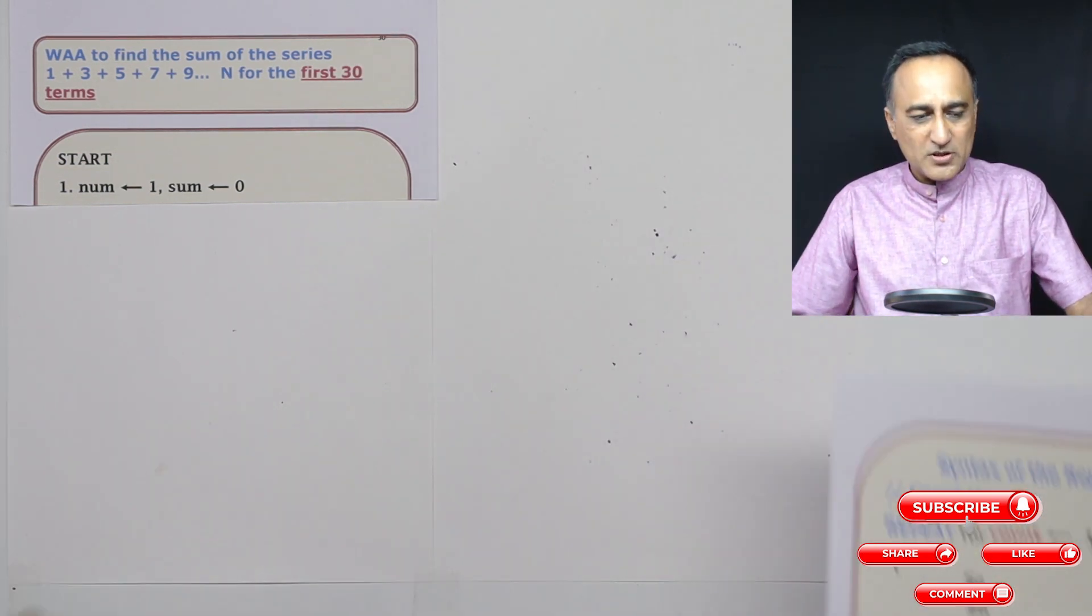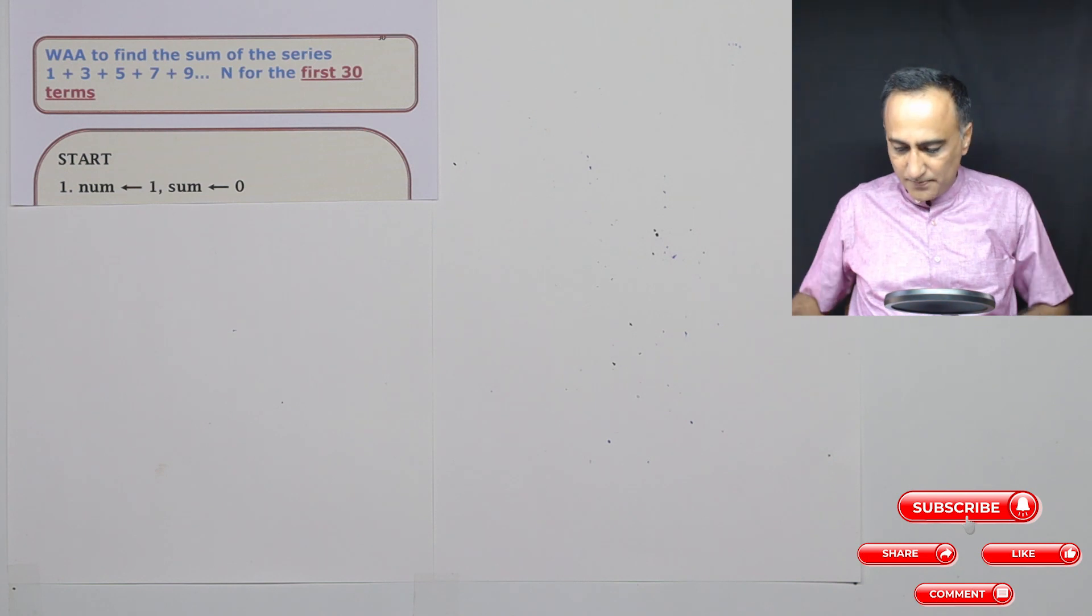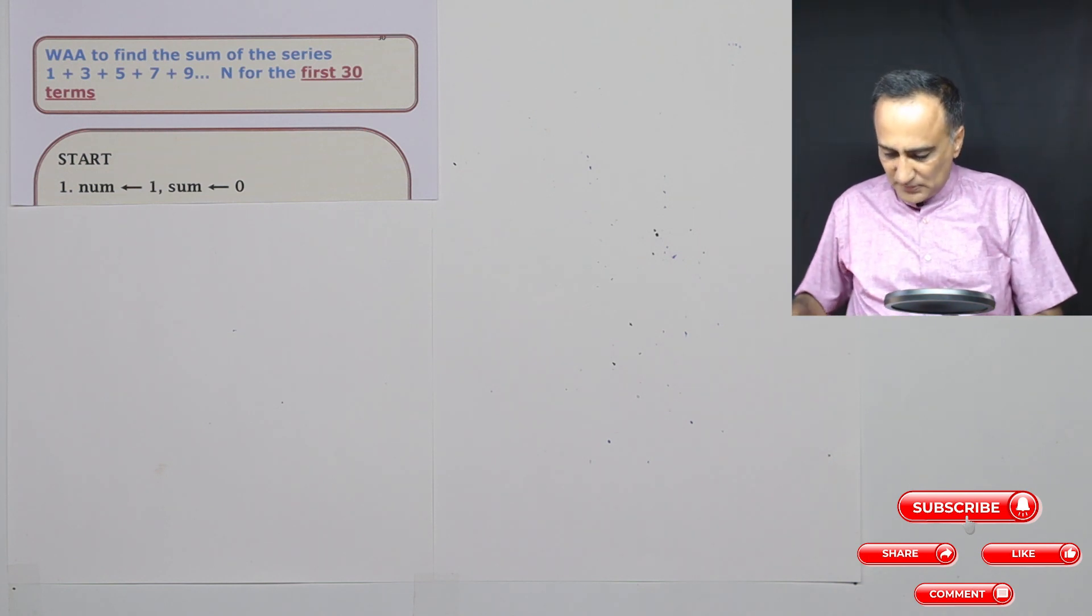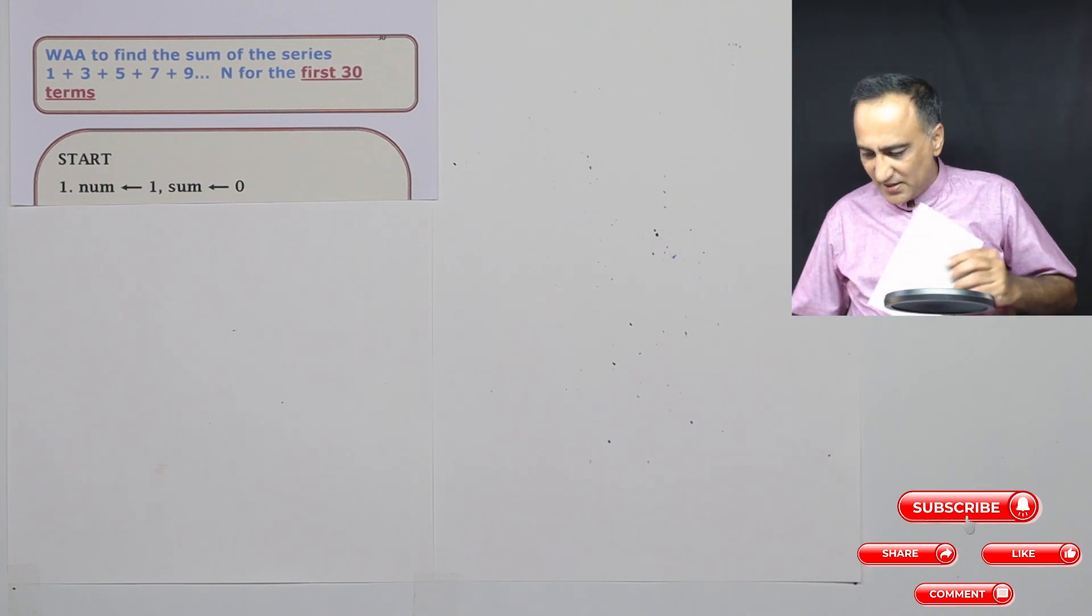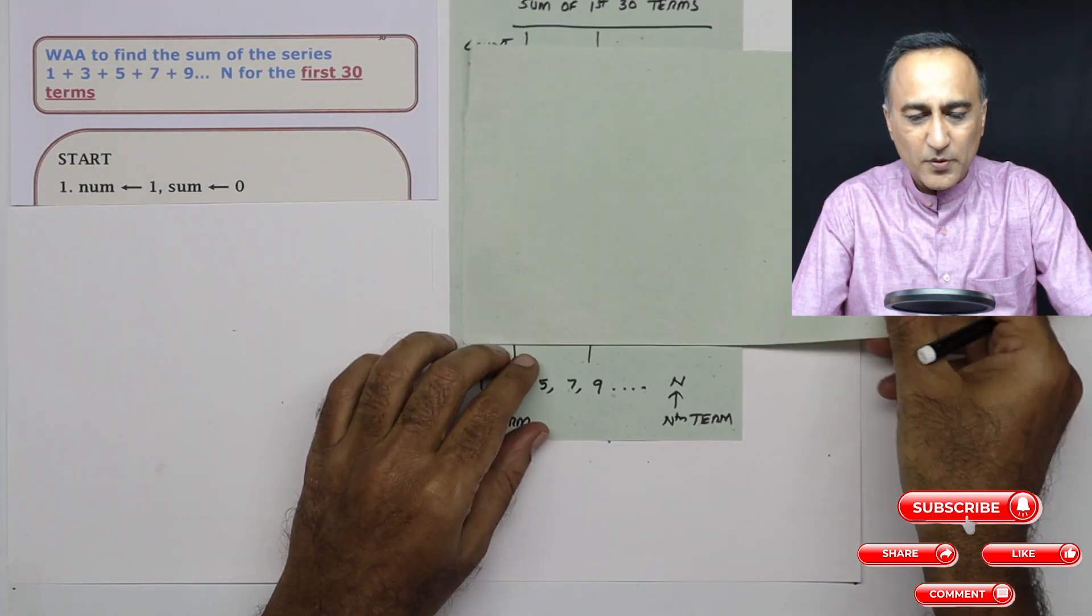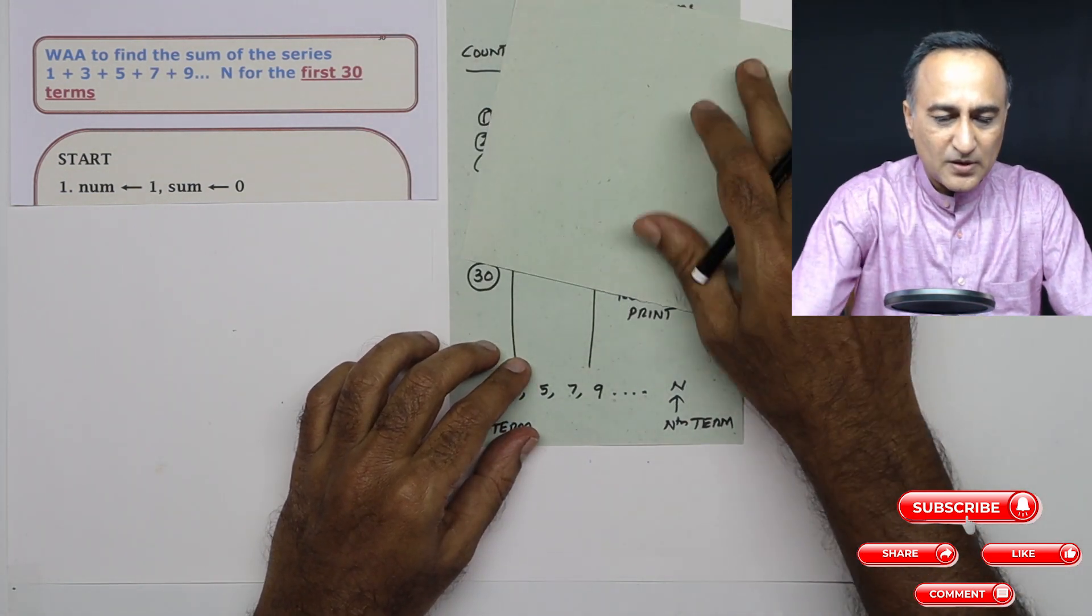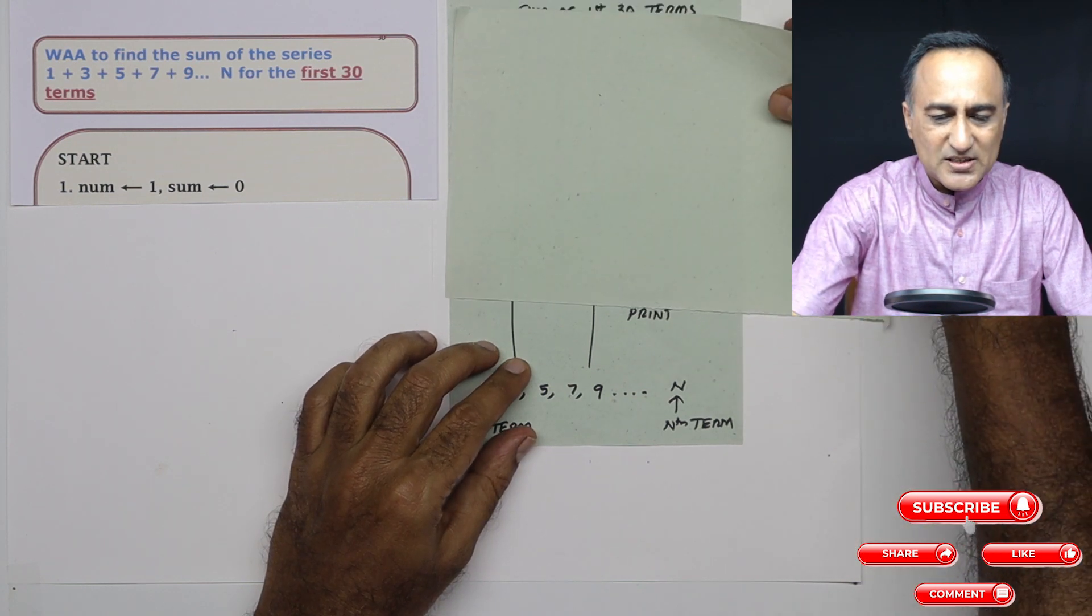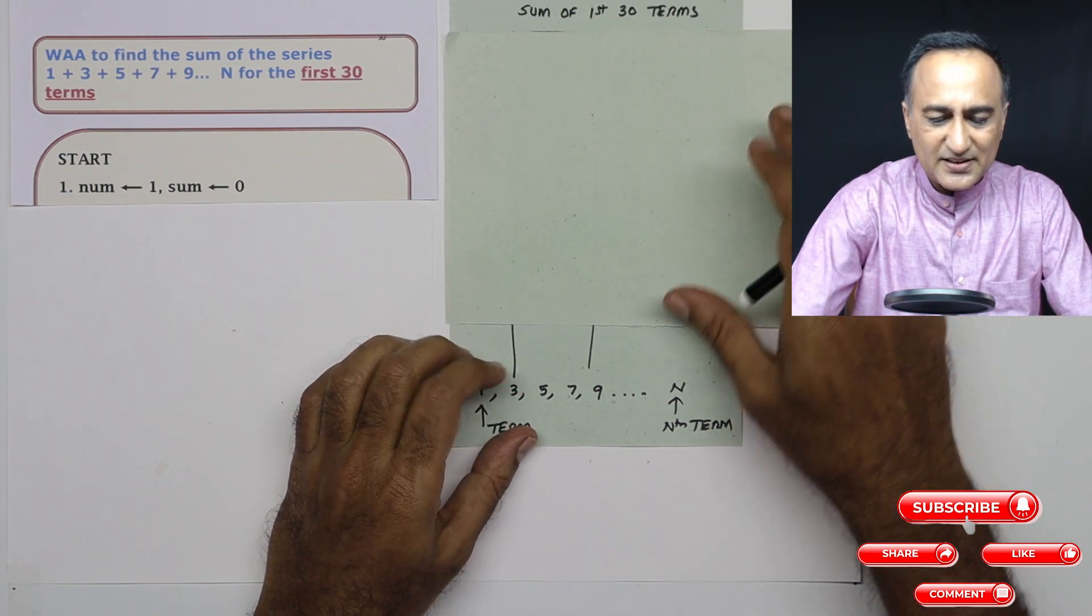So this is the syntax of a repeat for count. Quite simple, we'll be using it in this particular problem. Now, let's try to first understand what this problem is before we draw the logic. So in order to understand this particular problem, let's read the definition.